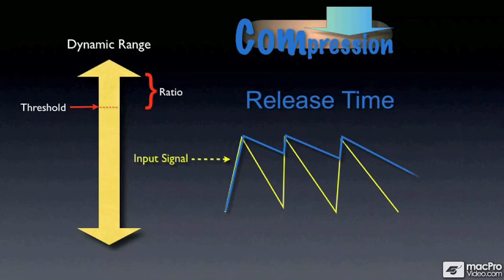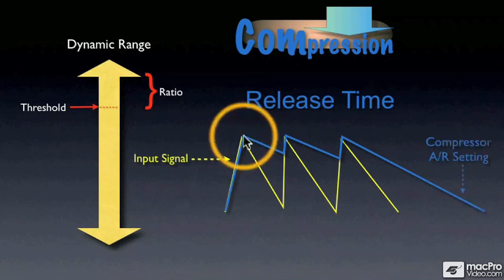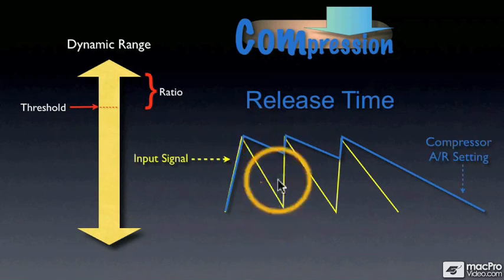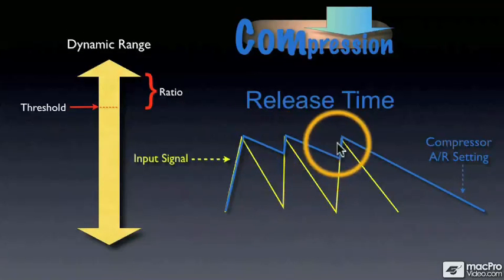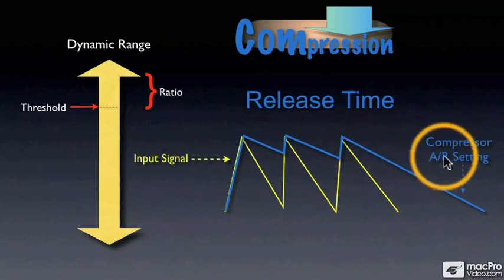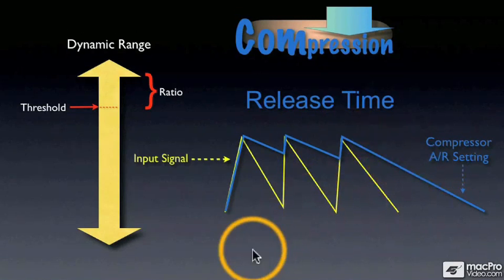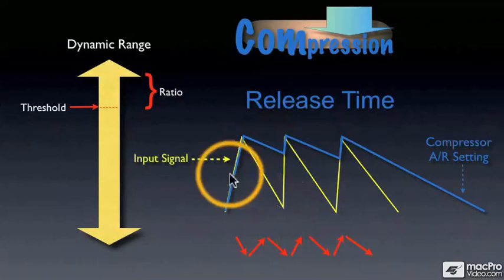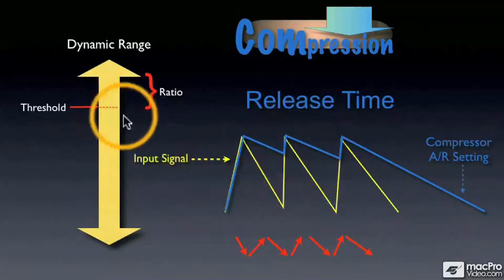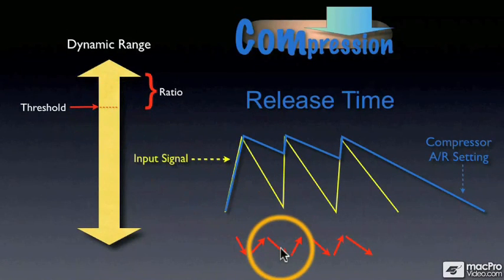As you can see here, our release time is slower, so it isn't following our input signal directly, creating less variation in volume level, which gets rid of the obvious pumping sound as the compressor wants to get back to normal levels.